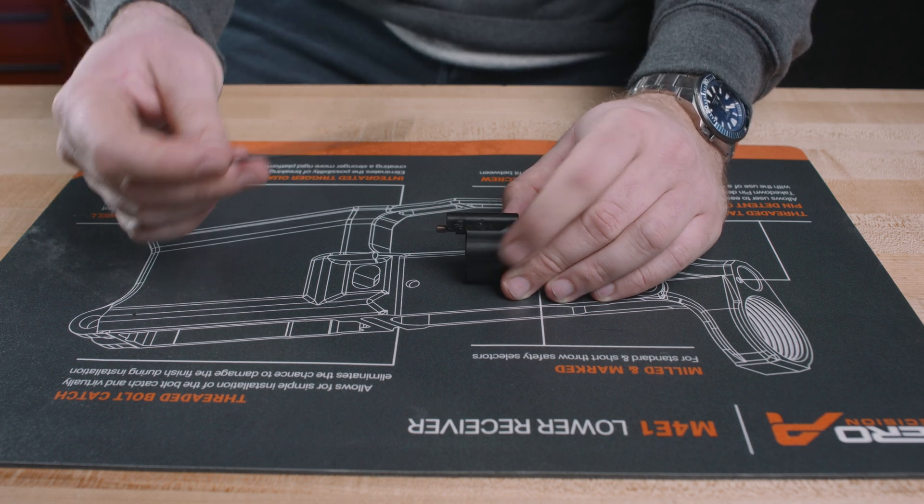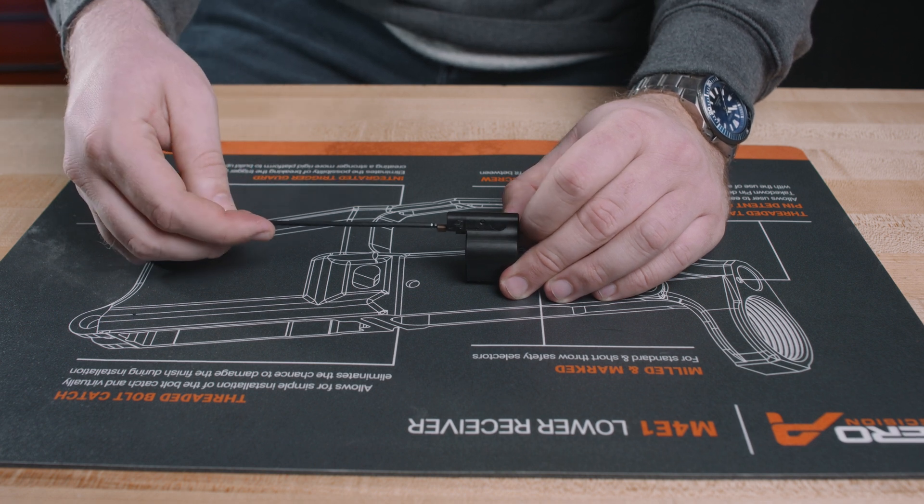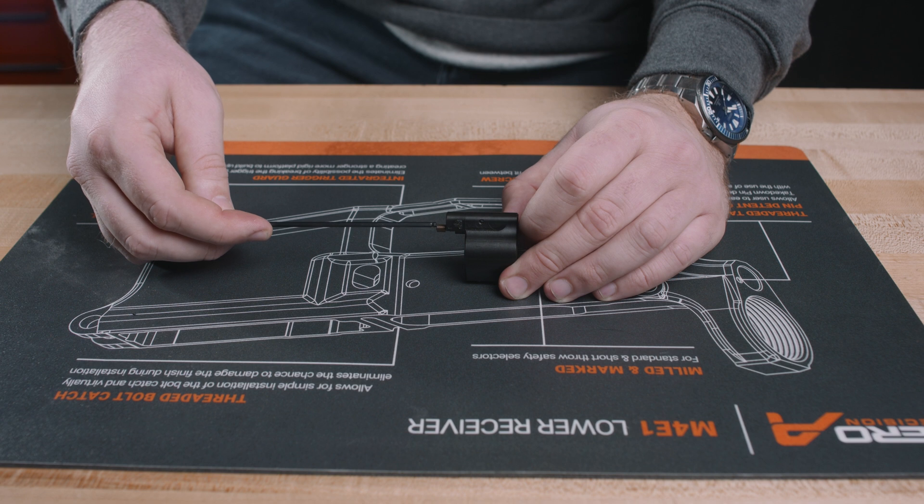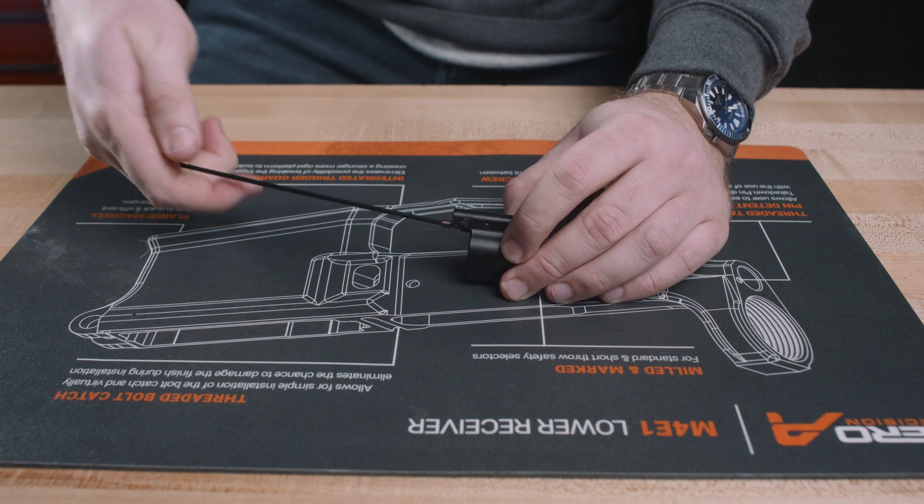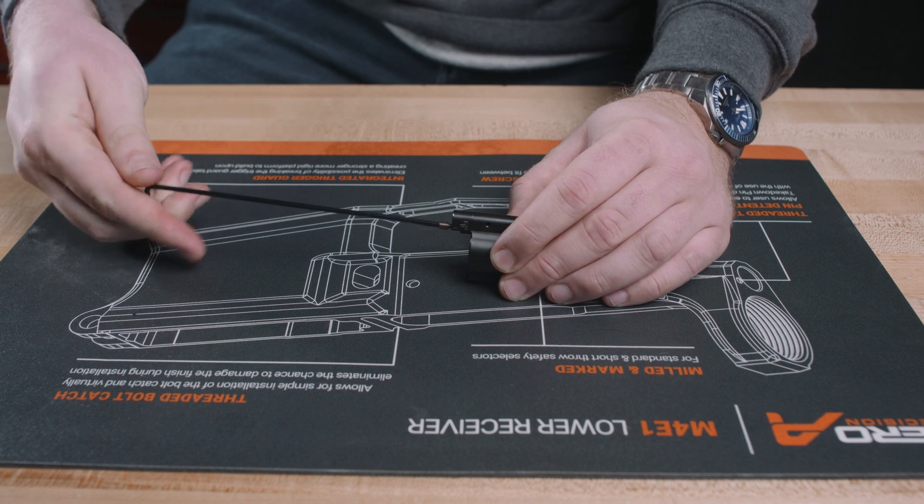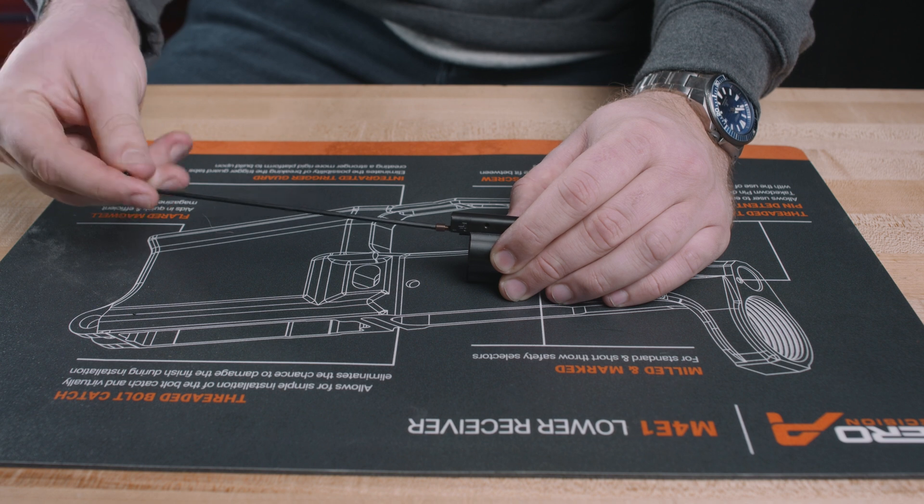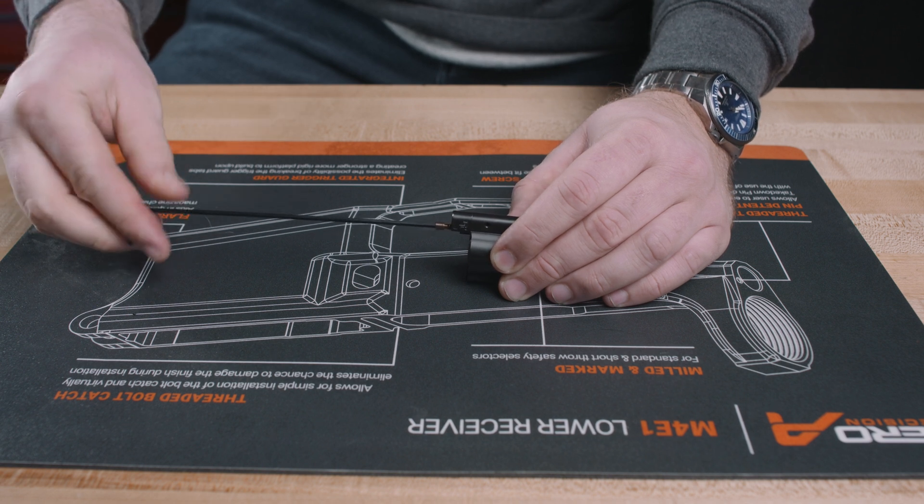If you take this supplied hex key that comes with your Aeroprecision adjustable gas block and stick it in the front here and then turn it counterclockwise, that'll actually loosen it and that's what's going to allow us to take the whole thing apart. So you're just going to give it some counterclockwise turns. You'll hear it clicking and then it stops.